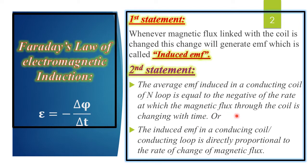Or in simplest form, we can say the Induced EMF in a conducting coil or conducting loop is directly proportional to the rate of change of magnetic flux. So this statement shows that Induced EMF is directly proportional to the rate of change of magnetic flux.